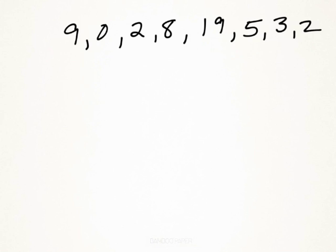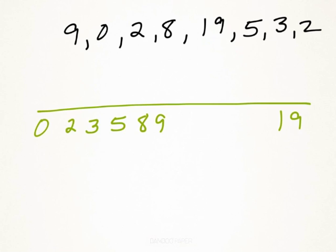So let's take a look at an example of how we could construct one of these. We have eight pieces of data here, and the first thing we need to do is get them in numerical order. In order to do that, I'm going to use a line plot. I could just go and say 0 is my lowest number, 19 is my highest number, and then write them in order.